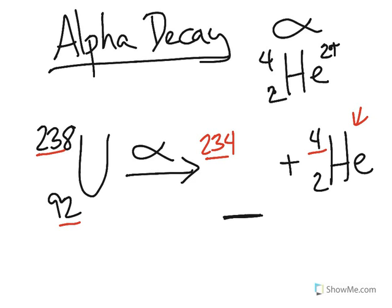Now, since this is a 92 over here, what happens is I subtract the two protons from the nucleus. The remaining atomic number should be 90.